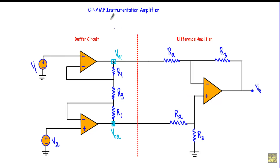In this video I will talk about operational amplifier instrumentation amplifier, and at last I will show you the derivation of the output voltage equation for this instrumentation amplifier circuit. Since long, electronic engineers have been in quest of a universal amplifier that may fit in most applications without any serious limitations of gain stability and impedance matching.